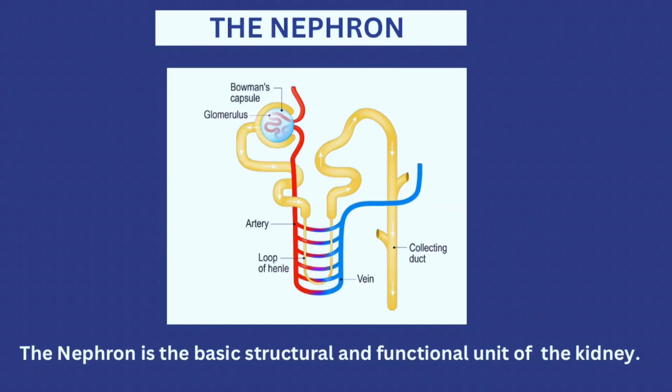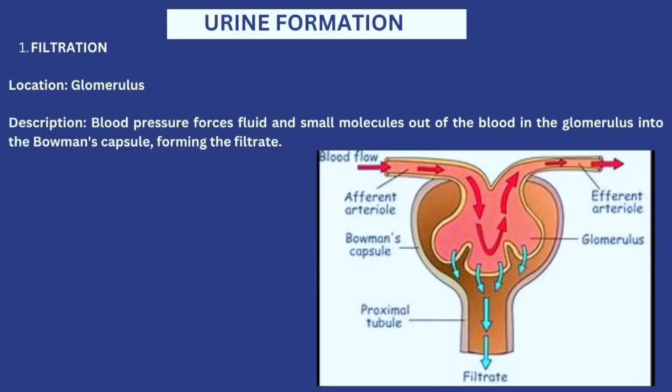We all remember that the nephron is the basic structural and functional unit of the kidney and it is responsible for urine formation. Let's quickly discuss the urine formation process and how each part of the nephron functions. The first part of the urine formation process is filtration, which happens in the glomerulus.